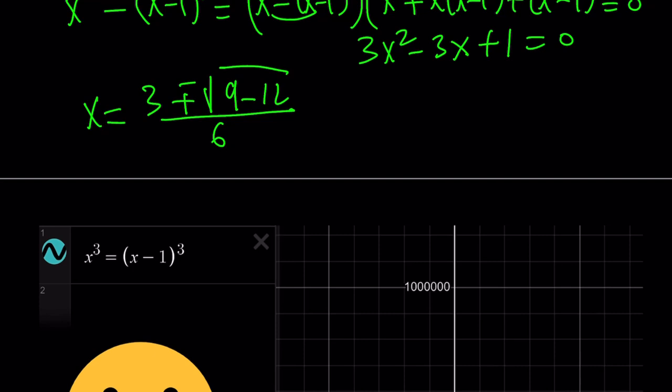Well, 9 minus 12 is negative, so that's going to give you the square root of a negative number, which is, you know, a complex number. However, we can write it as square root of 3i divided by 6. And obviously, this can be simplified.